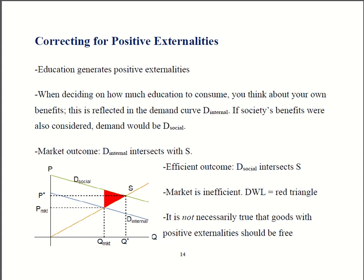Now, here is our supply curve for education. The internal demand is your demand for education. Your demand, though, is based only on your own costs and your own benefits. Recall we said earlier that if a good has positive externalities, the market, on its own, tends to provide too little of it.